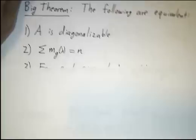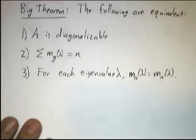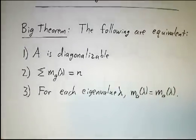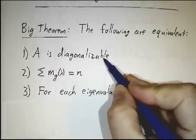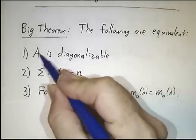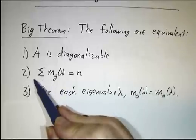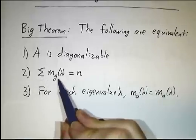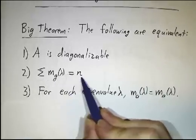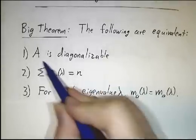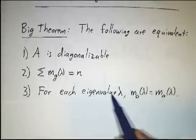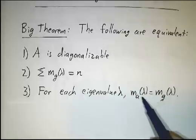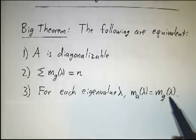Our big theorem was that we had three conditions that were equivalent. A matrix could be diagonalizable — that is to say, there's a basis for Rⁿ or Cⁿ that consists entirely of eigenvectors of A — or equivalently, the sum of all the geometric multiplicities adds up to n, where n refers to an n×n matrix. And that's equivalent to every eigenvalue having its algebraic multiplicity equal to its geometric multiplicity.